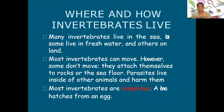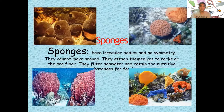Many invertebrates live in the sea, some live in fresh water, and others on land. Most invertebrates can move; however, some don't move — they attach themselves to rocks or the sea floor to survive. Others live inside other animals as parasites, which can be harmful. Most invertebrates are oviparous, meaning they came from eggs.